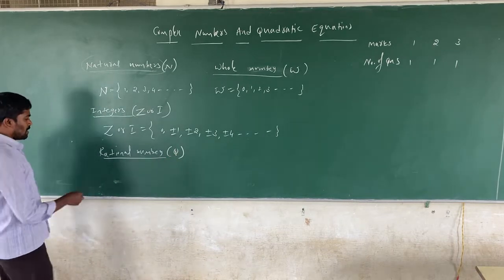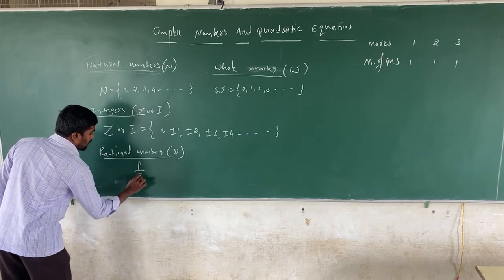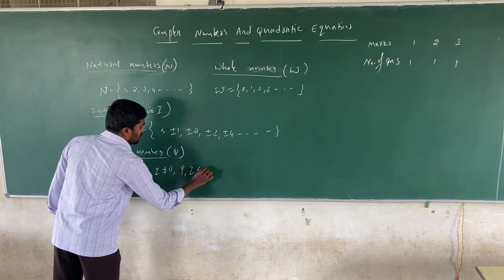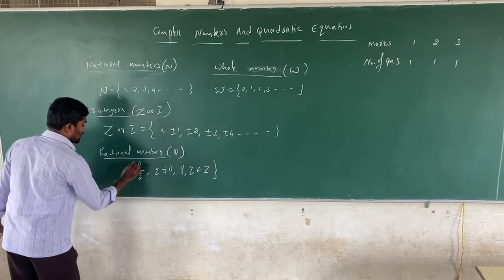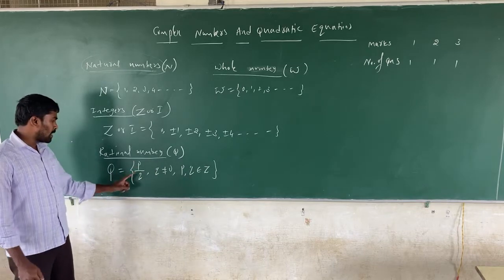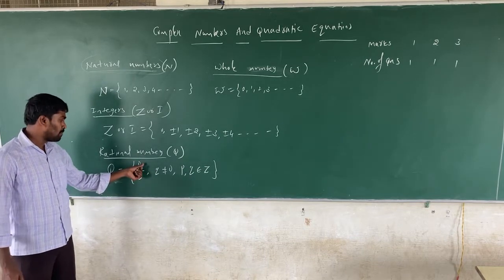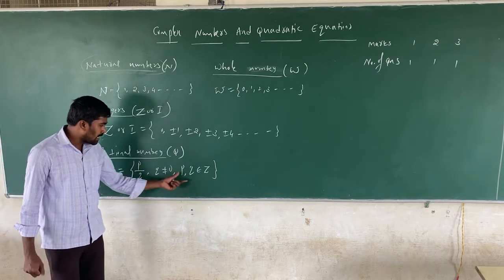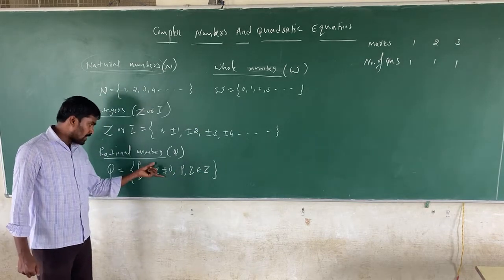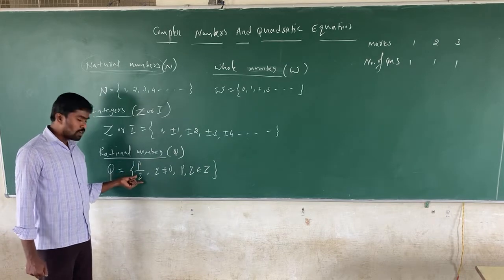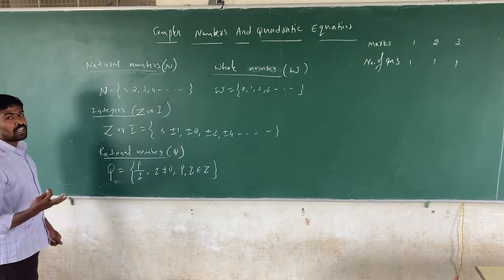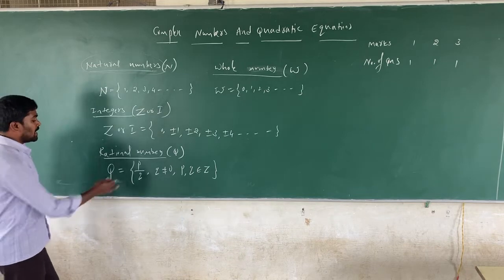What are rational numbers? They are the numbers of the form P by Q, where Q cannot be equal to 0, and both P and Q belong to Z — that is, integers. Because if Q is equal to 0, then the number is not defined, since anything divided by 0 cannot be defined.